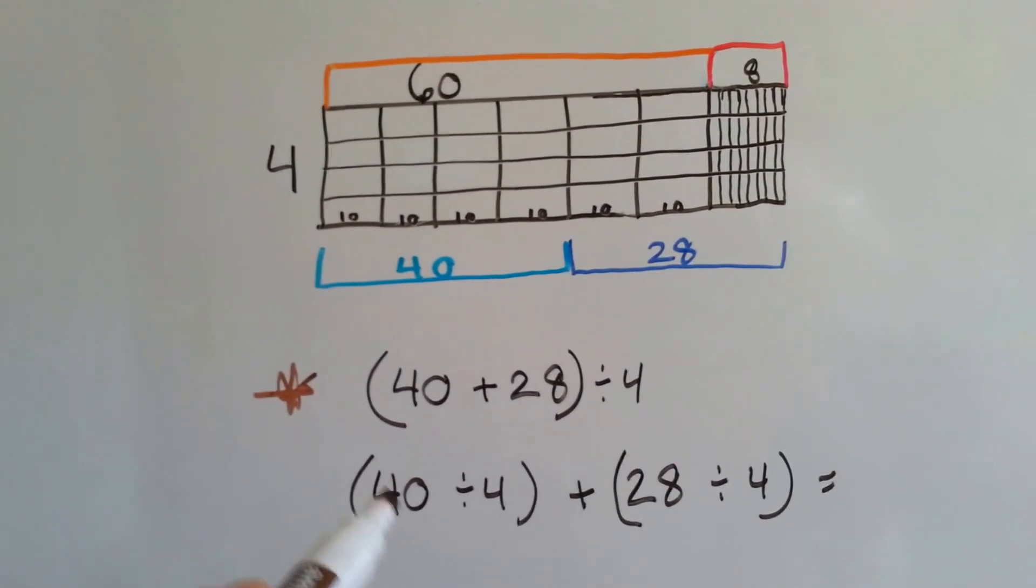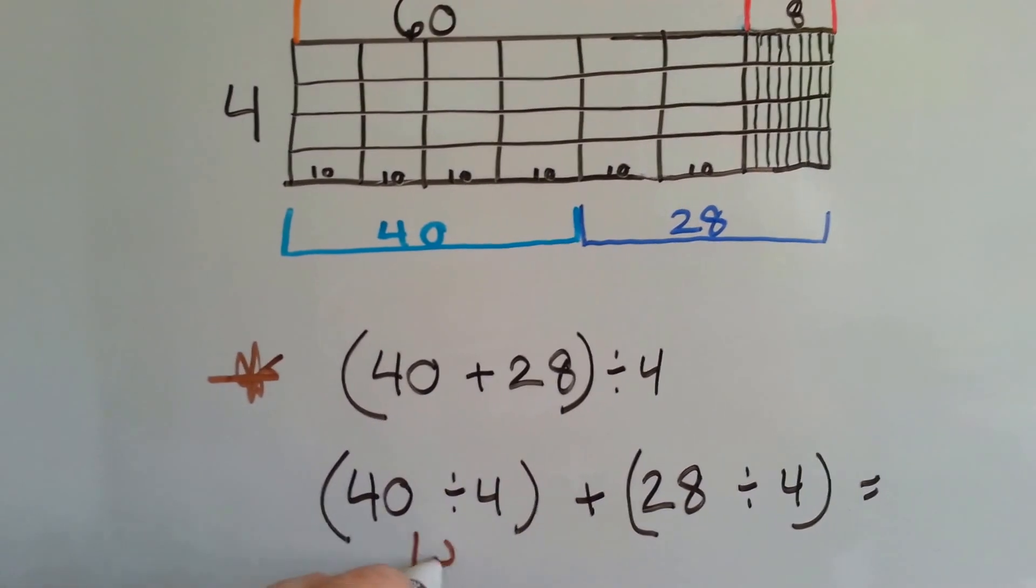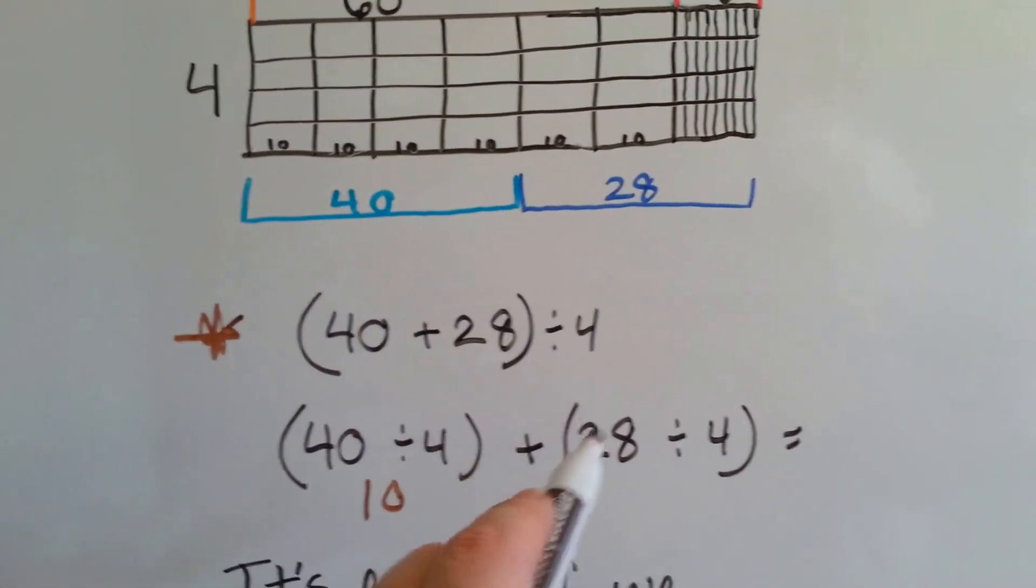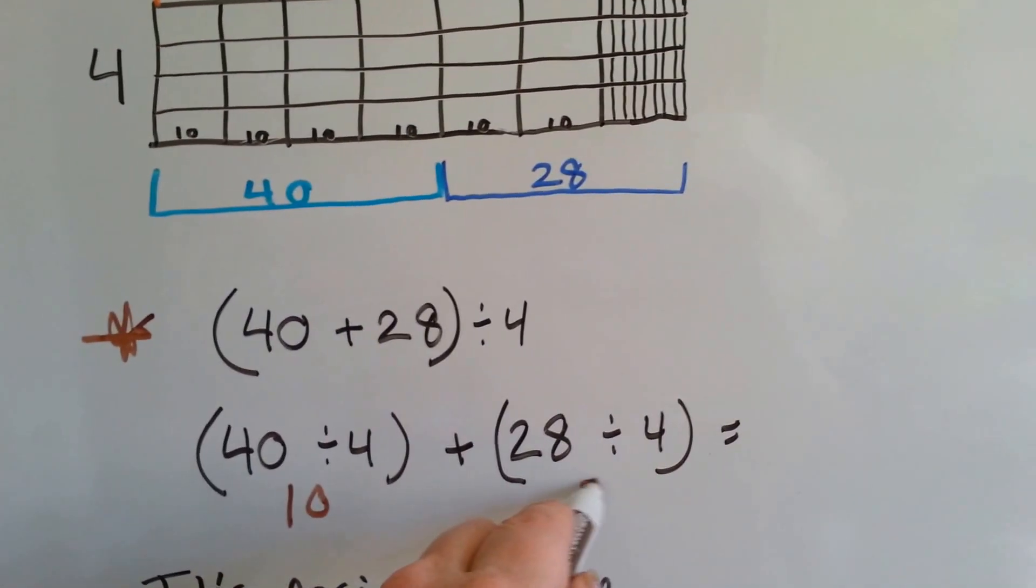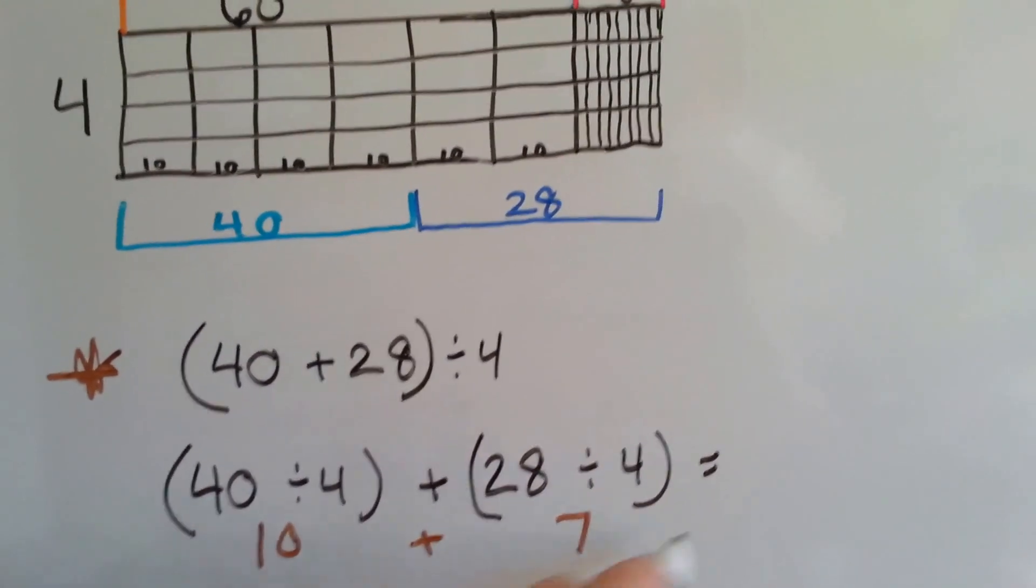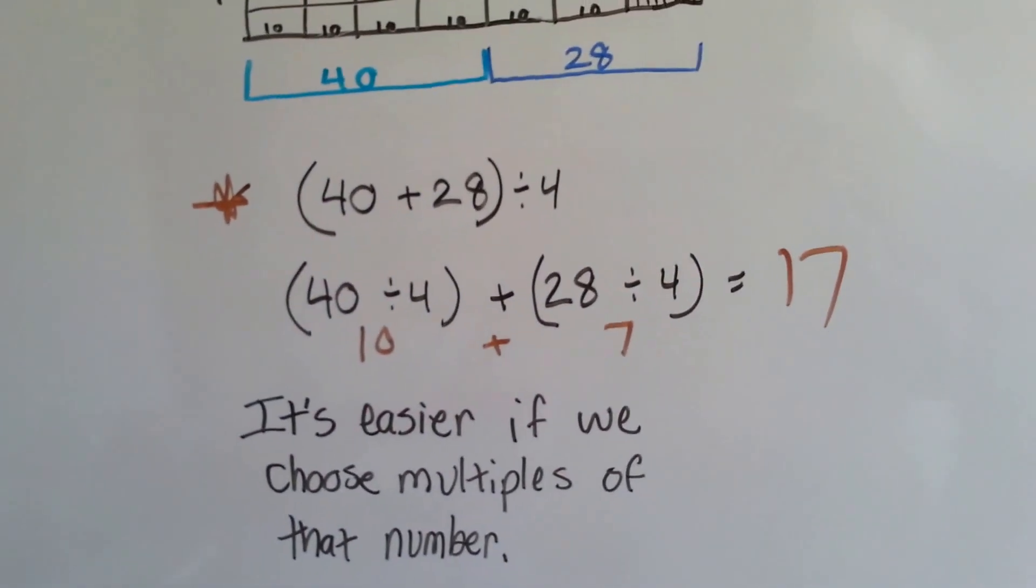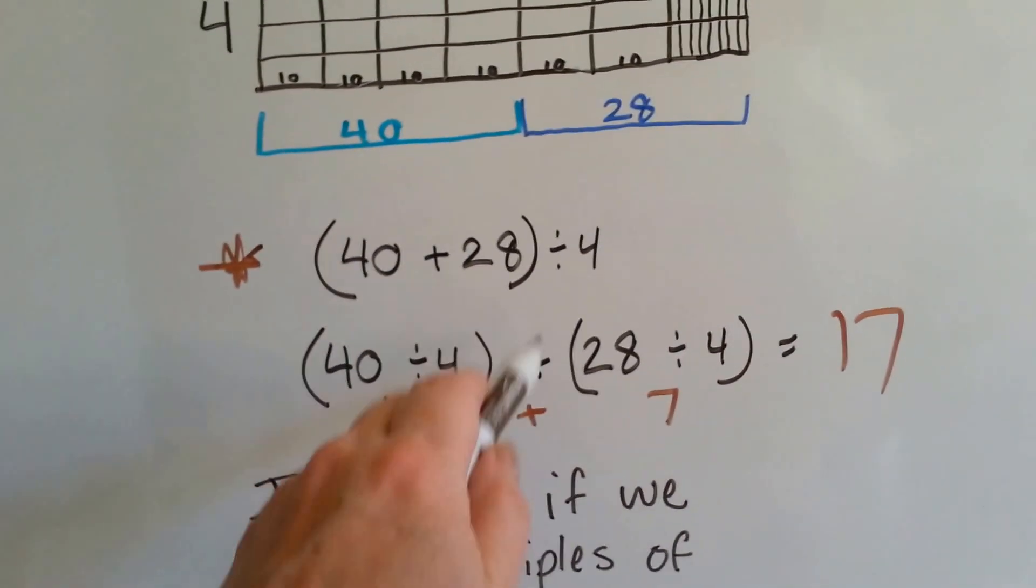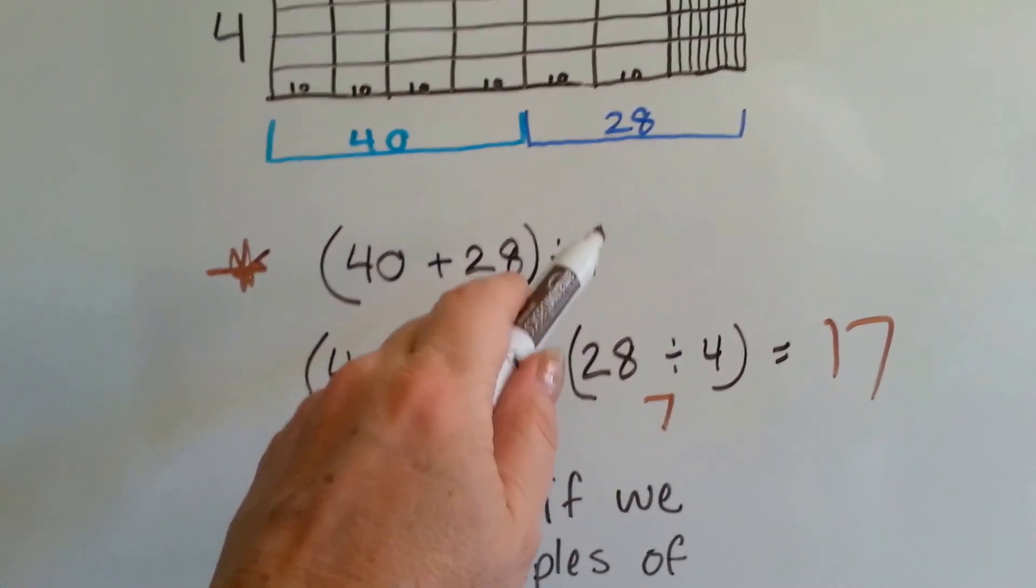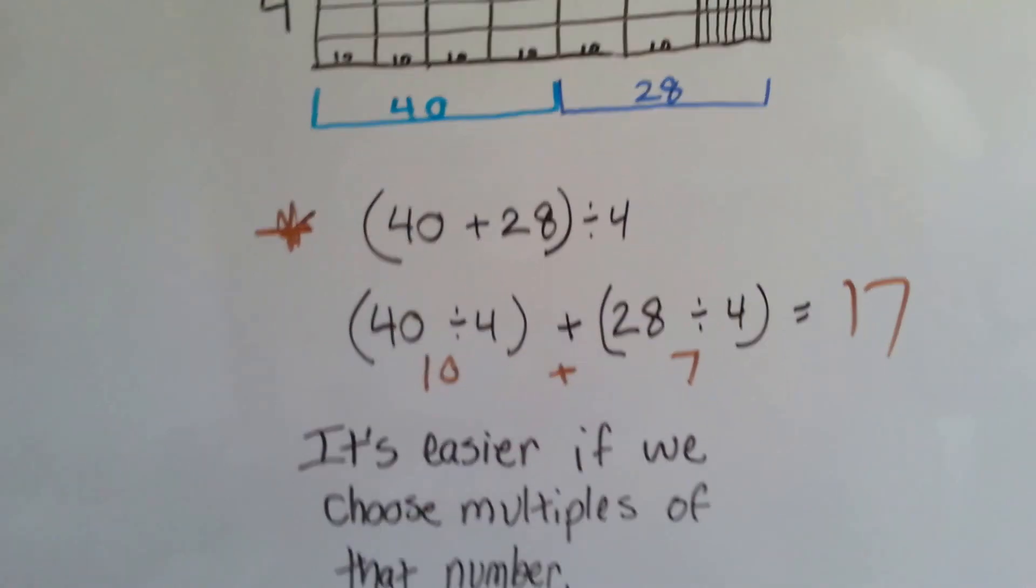40 plus 28 is 68 divided by 4. And what we do is say 40 divided by 4, which is 10, because 10 times 4 is 40. 28 divided by 4 is 7, because 4 times 7 is 28. And 10 plus 7 is 17. It's easier if we choose multiples of 4. If we're dividing by 4, we look for multiples of 4, like 40 and 28.